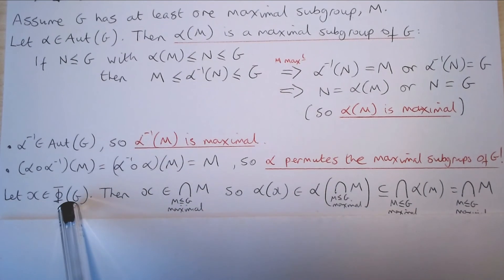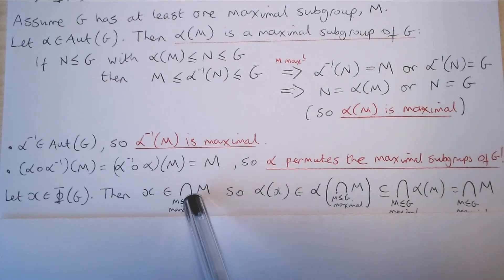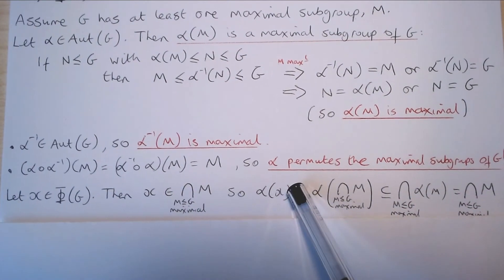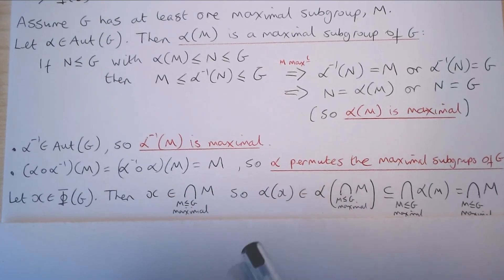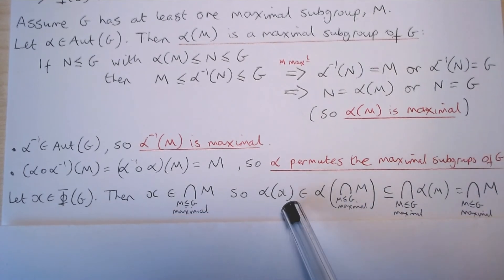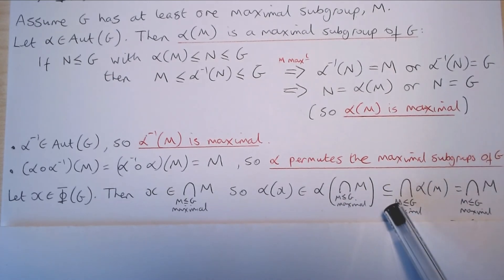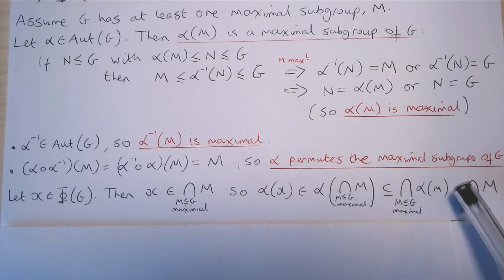Let x be an element in the Frattini subgroup of G. Then by definition, x is contained in the intersection of all of the maximal subgroups of G. To conclude that the Frattini subgroup is characteristic in G, we need to show that α(x) is contained in the Frattini subgroup of G. We have that α(x) is contained in α of the intersection of all of the maximal subgroups of G, and by basic set theory, this is contained in the intersection of all of the α(M)'s, where M ranges over maximal subgroups of G.